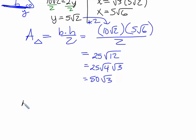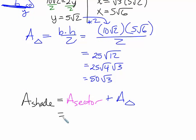So last but not least, we would say that the area shaded is going to be the sum of the parts. It's the area of the sector plus, be careful, the area of the triangle. The area of the sector is what we found earlier. That was the 500 pi divided by 3 plus the area of the triangle.